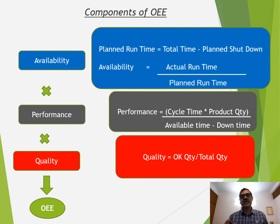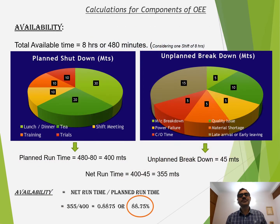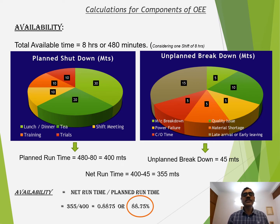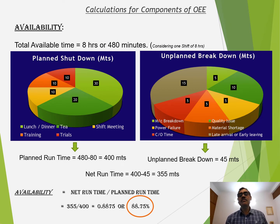Let us take one example to make things clearer. Assume we are running a shift of 8 hours, so total available time is 8 × 60 = 480 minutes. Planned shutdown — lunch time, tea time, shift meetings, planned trainings, trials — for example, this is 80 minutes. So planned runtime will be 480 minus 80, which comes to 400 minutes. Then unplanned breakdowns — machine breakdown, power failure, changeover time, quality issues — total, for example, 45 minutes.